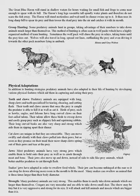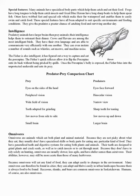Many animals have specialized body parts which help them catch and eat their food. Frogs have long tongues to help them catch insects, and great blue herons have long sharp beaks to help them spear fish. Otters have webbed feet and special oils which make their fur waterproof, enabling them to swim and catch food easily. These special features have all been adapted to suit specific environments and feeding conditions, giving the predator a greater chance of catching food and surviving.